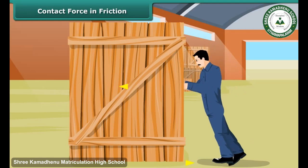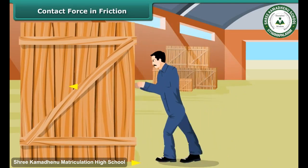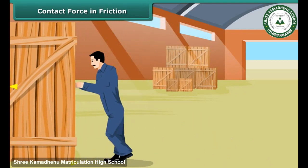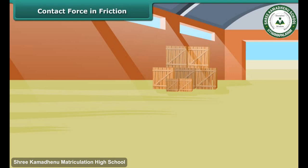Once the box starts sliding, you may find it easier to move the box already in motion. This example proves that friction depends on the amount of contact force pushing the two surfaces together.